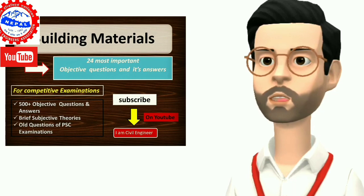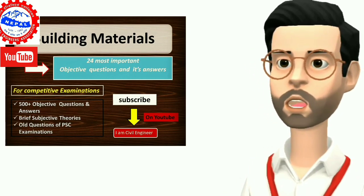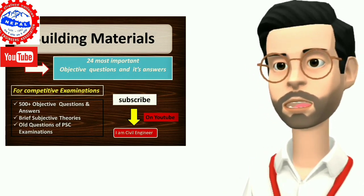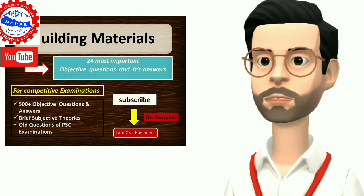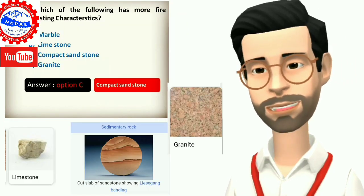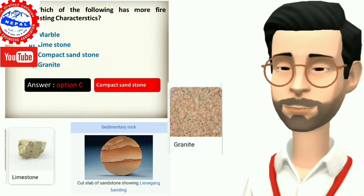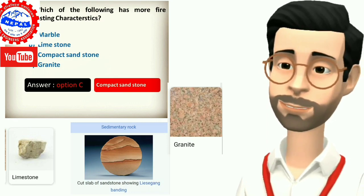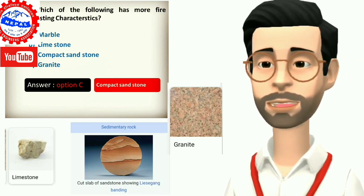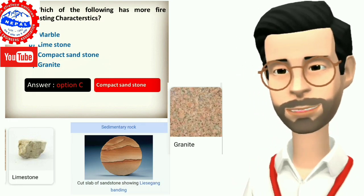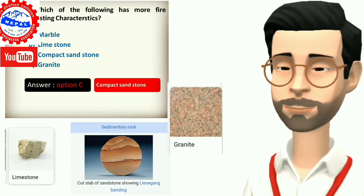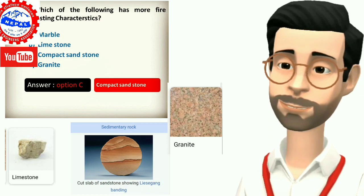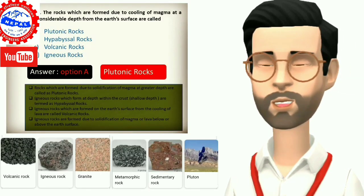So don't forget to watch my video and also like and share to your friends. Let's start. One, which of the following has more fire-resisting characteristics? A) marble, B) limestone, C) compact sandstone, D) granite. Answer is option C, compact sandstone.